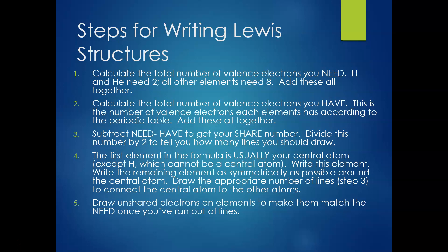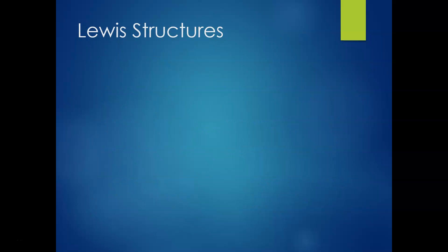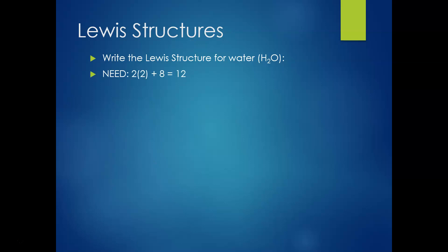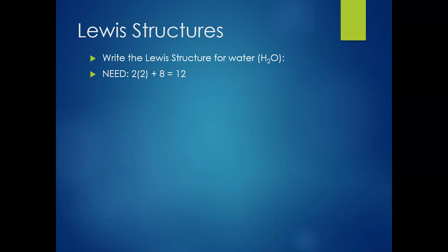I know right now you're thinking this doesn't make any sense, but as we practice you're going to get it. So let's do a practice problem together. You're asked to write the Lewis structure for water — good old H₂O. Let's go through our steps. Step one, find the need: two hydrogens each need two electrons, and one oxygen needs eight electrons, giving a total need of 12.